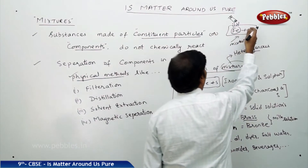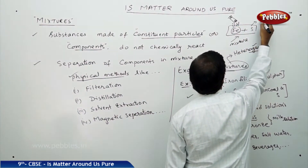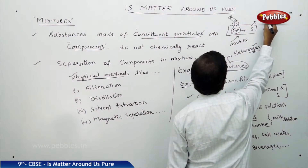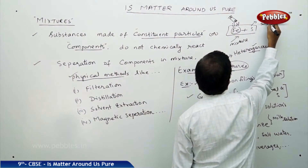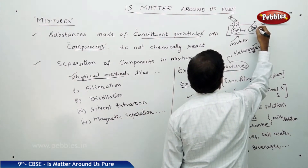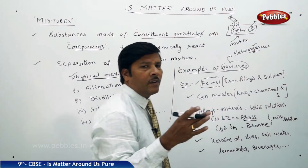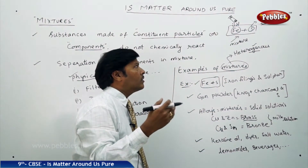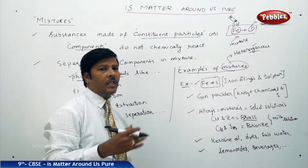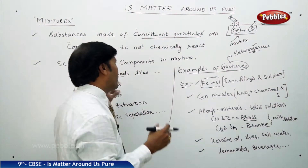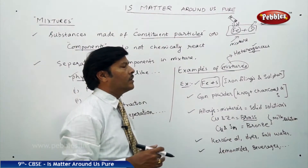On the other hand, if you want to separate sulphur from the iron, you add a solvent — carbon disulphide solvent. If you add carbon disulphide solvent, you find that the carbon disulphide takes away the sulphur leaving behind the iron. So successfully we are separating both the iron and sulphur through physical methods.